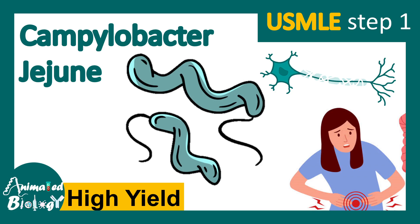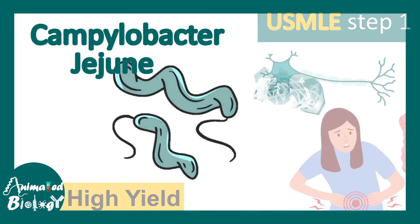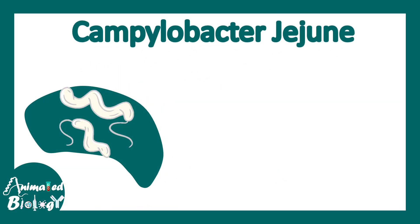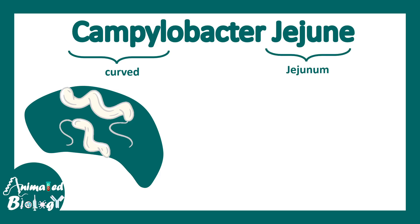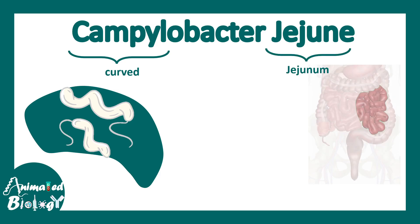In this video we'll be talking about Campylobacter jejuni, a high-yield topic for USMLE Step 1. Campylobacter jejuni is a bacterium associated with gut problems or dysentery. 'Campylo' stands for curved and 'jejuni' stands for jejunum, which is a part of the intestine, so Campylobacter is associated with intestinal distress.